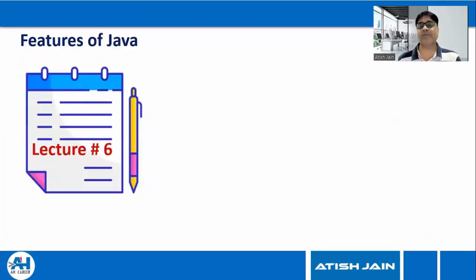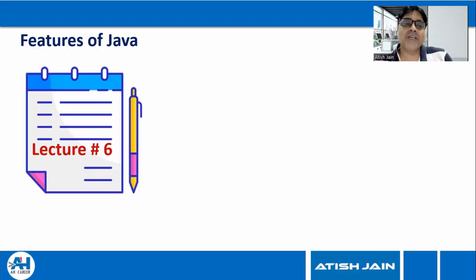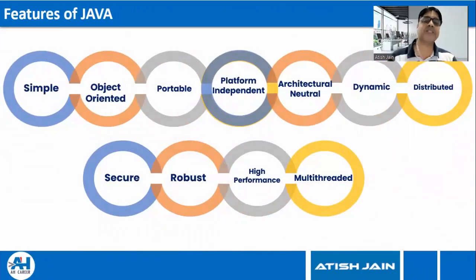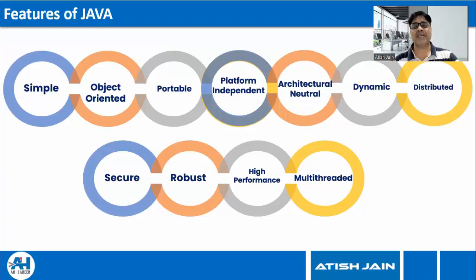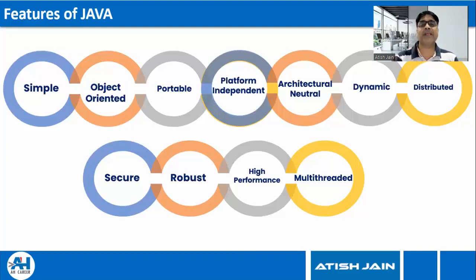What are the features of Java — what makes Java one of the best programming languages for internet application development? The features are: Java is simple, object-oriented, portable, platform-independent and architectural-neutral, dynamic, distributed, secure, robust, high-performance, and multi-threaded. Let's see each feature in detail.